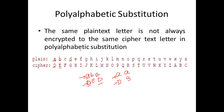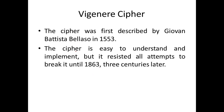The Vigenère cipher comes under the category of Polyalphabetic Substitution Cipher. This cipher was first described by Battista Bellaso in 1553 — almost 500 years ago. It was very easy to understand and implement, but it resisted all attempts to break it until 1863. For almost 300 years they were trying to break this cipher. Today we are going to learn this cipher that took 300 years to break.